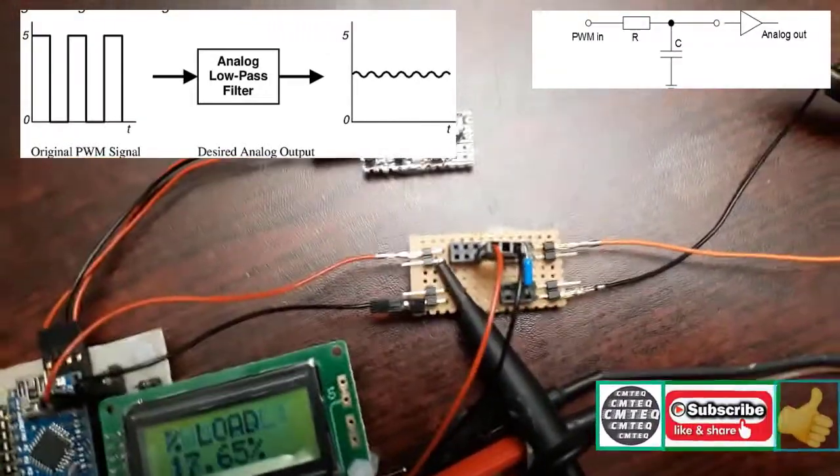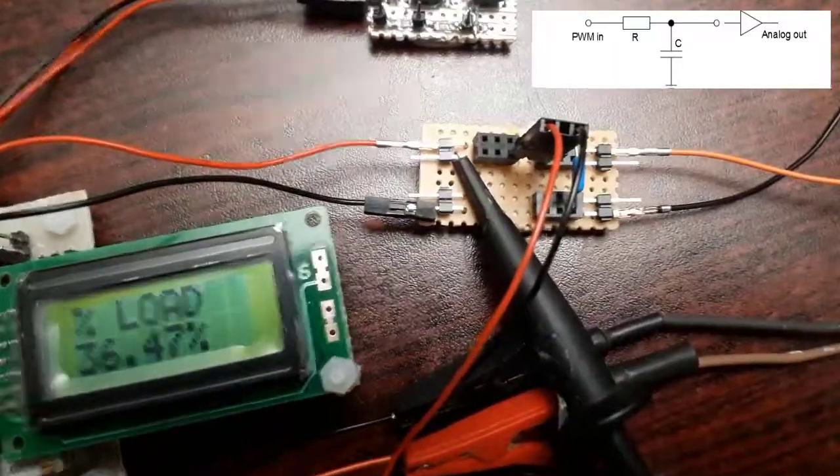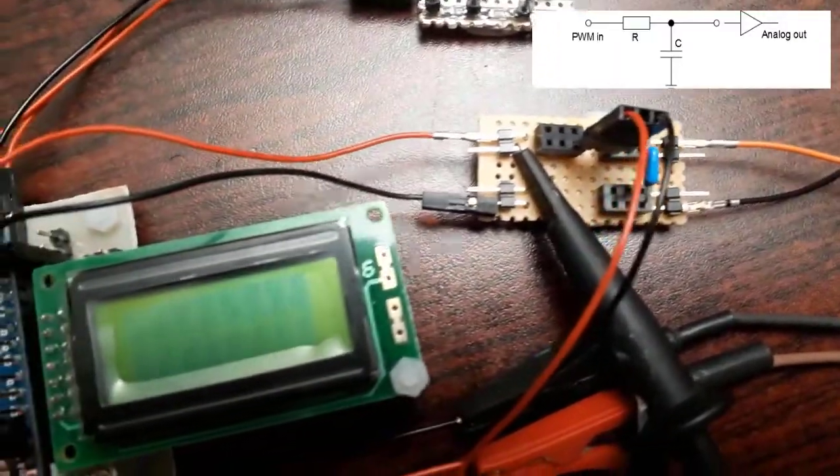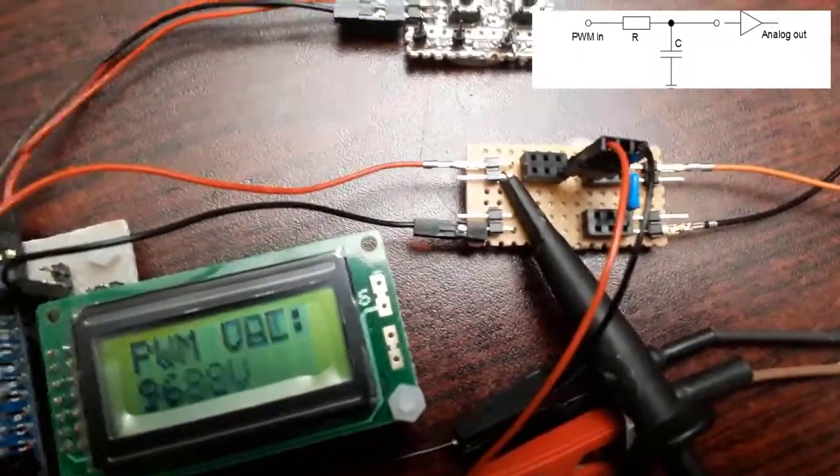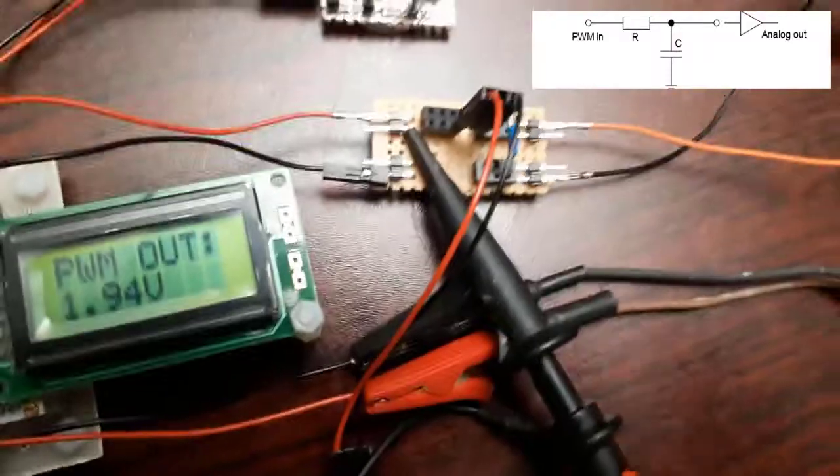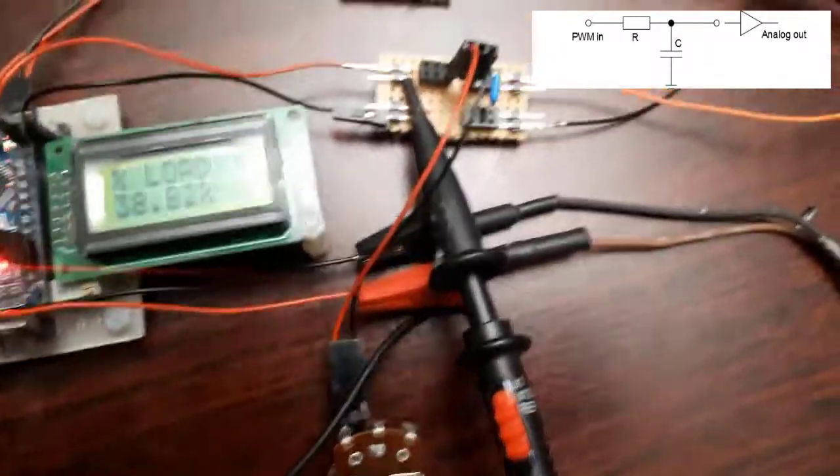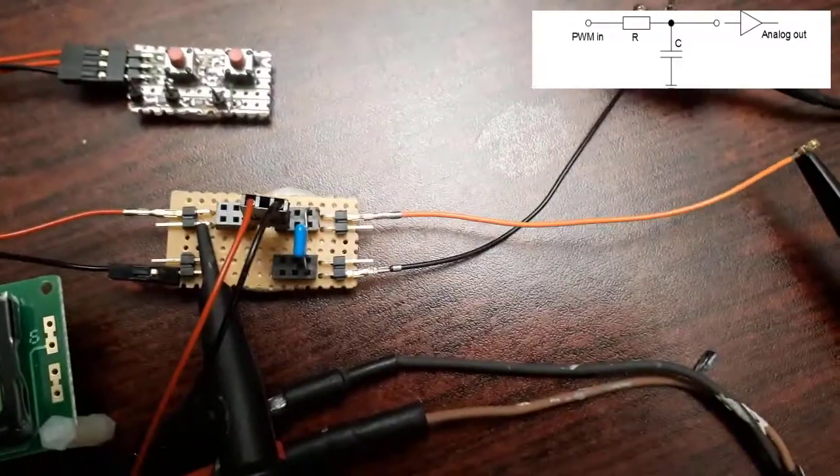This is why it's called a low pass filter. Only low signal will go through. I've connected two oscilloscope probes. One from the input so that we can see the input PWM signal. That is this one here is on channel 2.